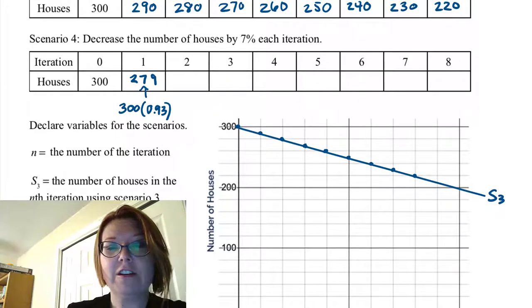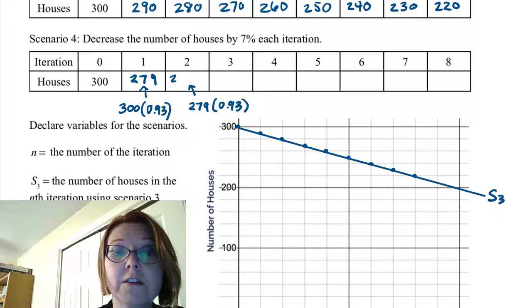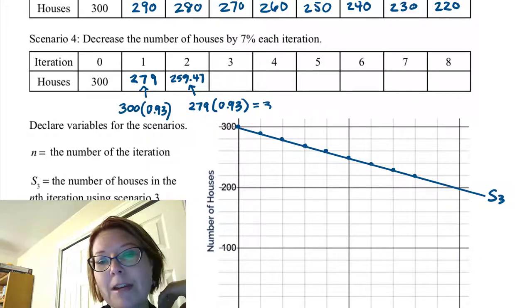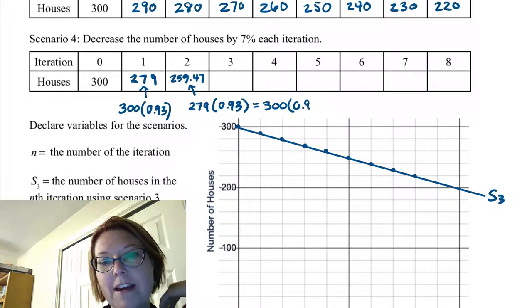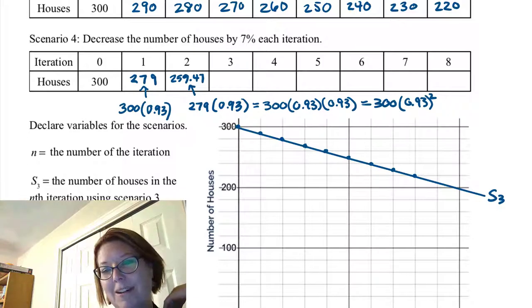And the second iteration, what we want to do is 0.93 times the first iteration. So it's 279 times 0.93, which is 259.47. Now from experience, we know that that's also the same thing as 300 times 0.93 times 0.93, or 300 times 0.93 to the second power. And so we could calculate anything in this table by doing 300 times 0.93 to the iteration power.